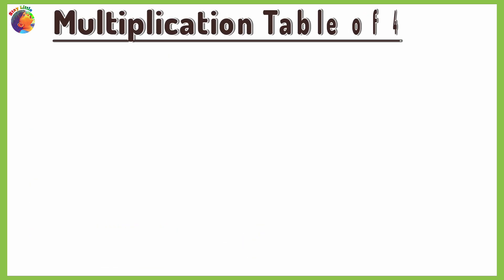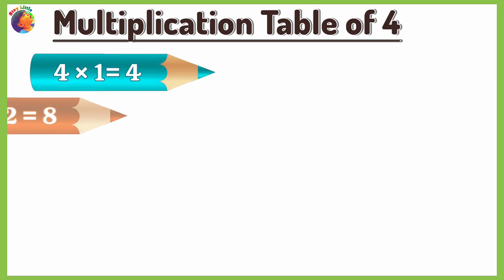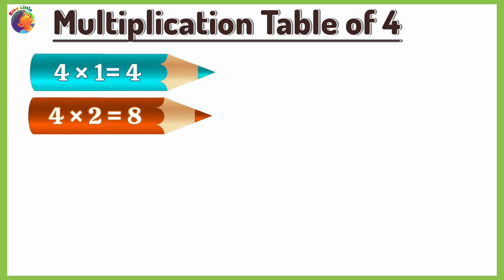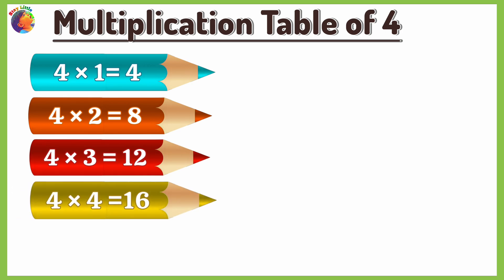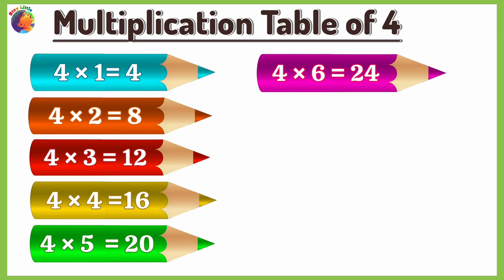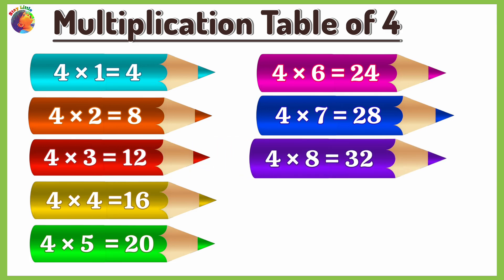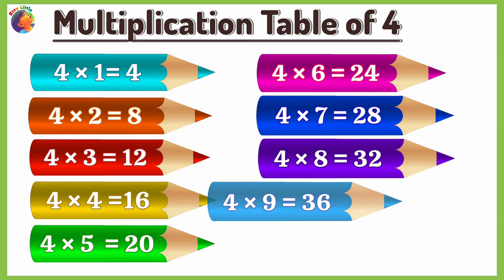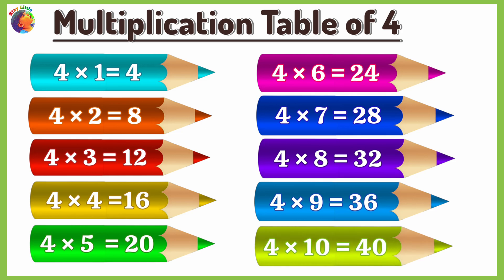Multiplication Table of 4. 4 times 1 is 4, 4 times 2 is 8, 4 times 3 is 12, 4 times 4 is 16, 4 times 5 is 20, 4 times 6 is 24, 4 times 7 is 28, 4 times 8 is 32, 4 times 9 is 36, 4 times 10 is 40.